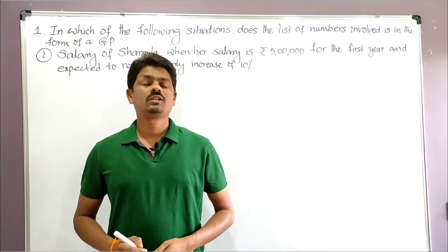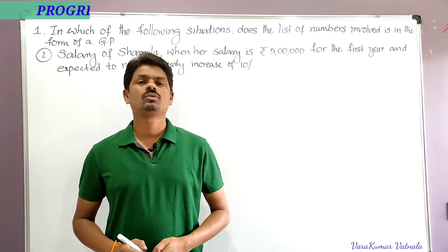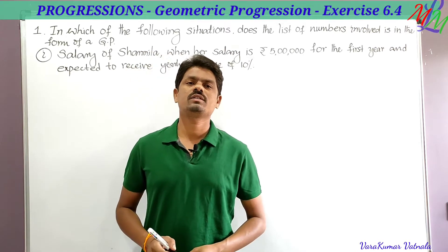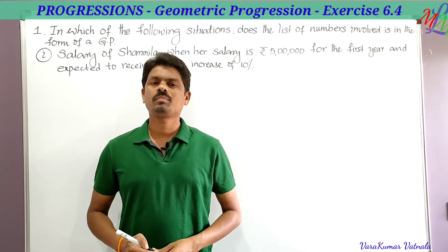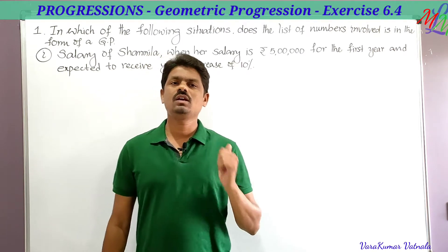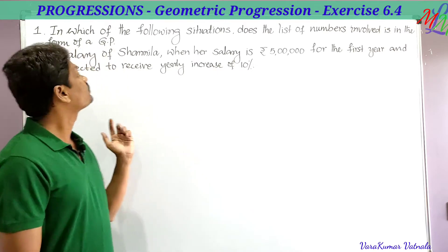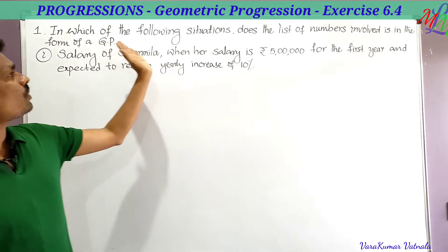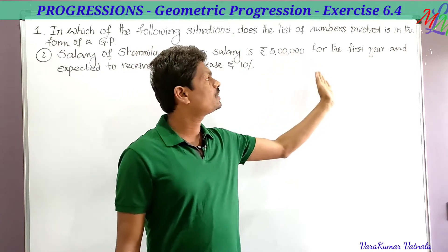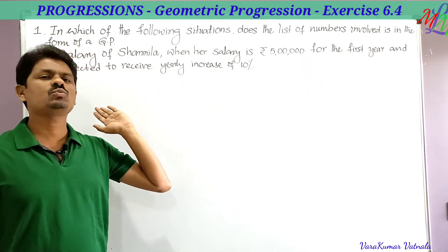Hello students, welcome to my channel Learn More Math. Today we are going to solve a problem from exercise 6.4. The problems are related to geometric progression. Here, the first problem asks: in which of the following situations does the list of numbers involved form a GP?